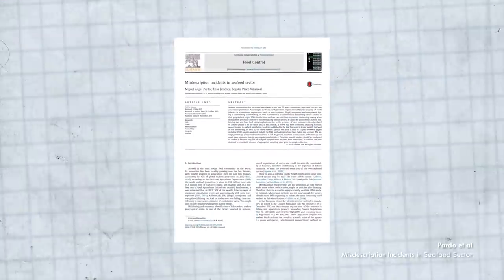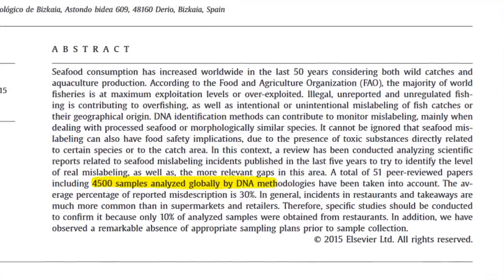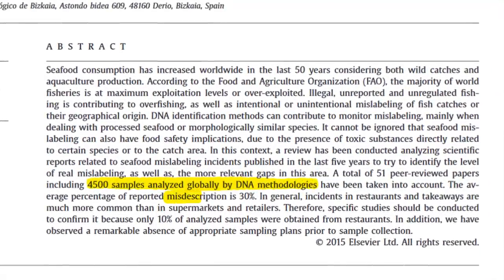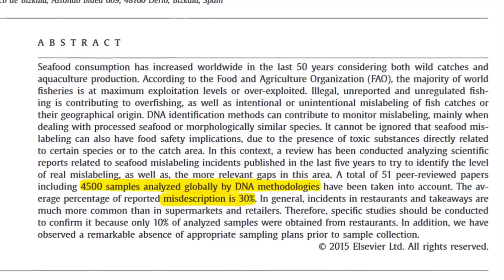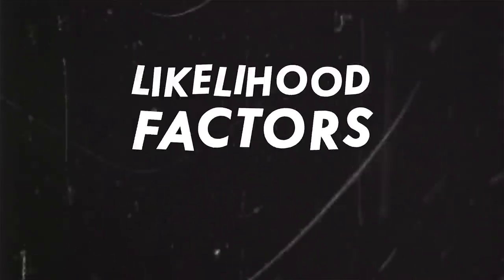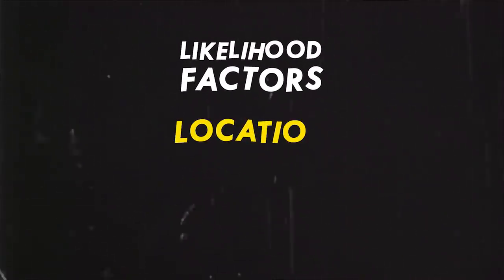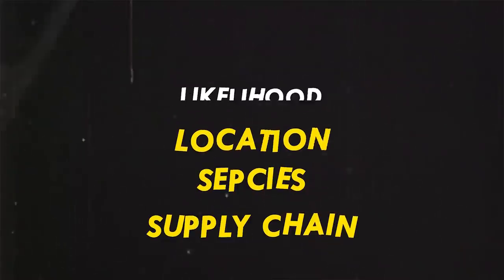And this problem occurs a lot more often than you might expect. A review of 51 peer-reviewed papers testing over 4,500 samples worldwide estimates that about 30% of fish species are mislabeled. The actual likelihood that the fish you're about to eat is a fraud depends on where you are, what you're eating, and how long it took to get to your plate. So the key is to know where your fish is coming from and how it was caught.